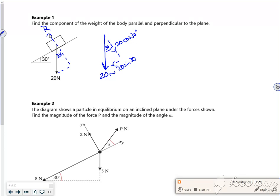Right then. So if we go parallel to the plane, the only force acting parallel to the plane is the 20 sine 30, which is 10 newtons.